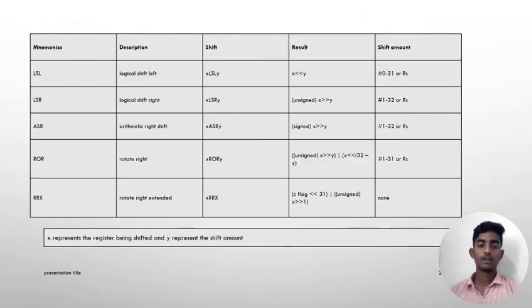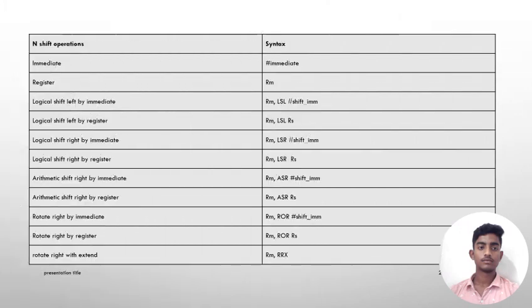As you can see the table of the barrel shifter: LSL refers to logical shift left, LSR refers to logical shift right, ASR arithmetic right shift, ROR refers to rotate right, RRX rotate right extended. This table also refers to barrel shifter with N shift operations with their syntax.